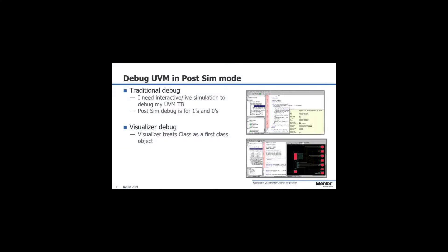Let's talk specifically about UVM. Traditional debug involves running interactive live sim to debug UVM, with post-sim debug for the RTL zeros and ones. Visualizer turns that around — we treat classes as first-class objects, which means we can do them in post-sim as well. We've ported the offline debug to the UVM paradigm. You don't necessarily need to run interactively; a lot of the data is available offline in a post-sim environment, which also frees up the simulation license. If you're limited on simulation seats, it now just takes a debug seat.